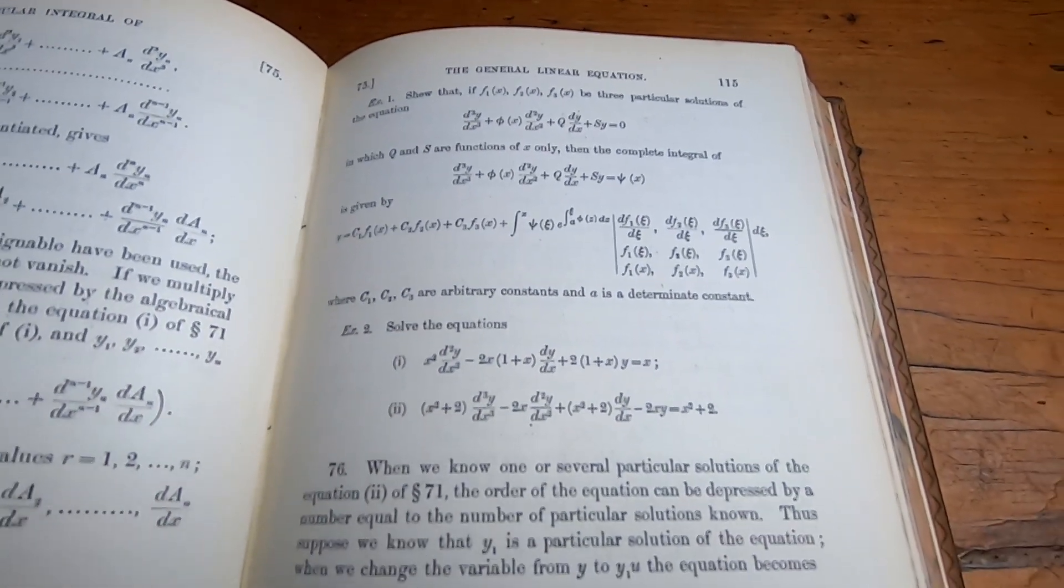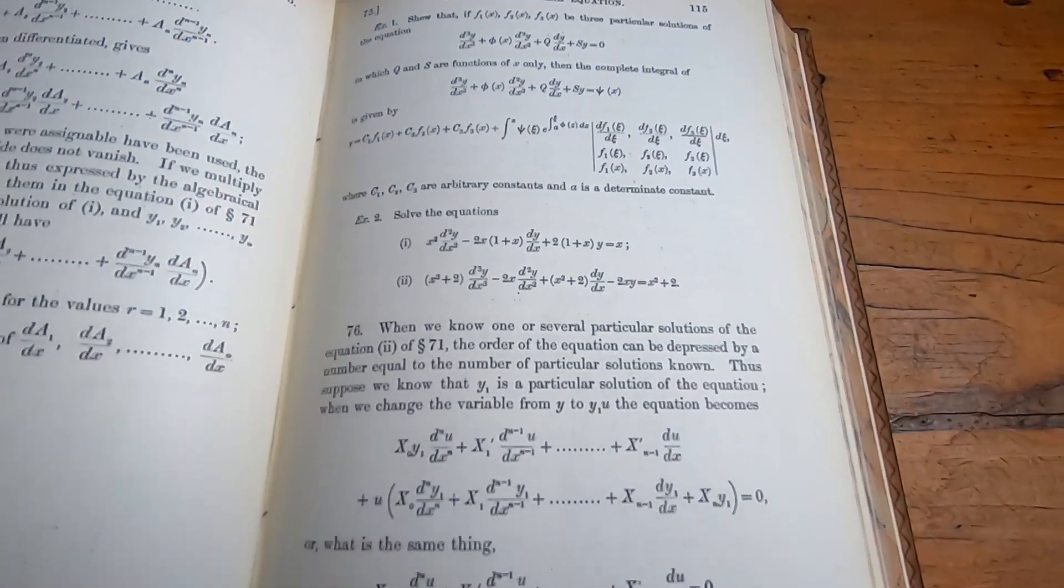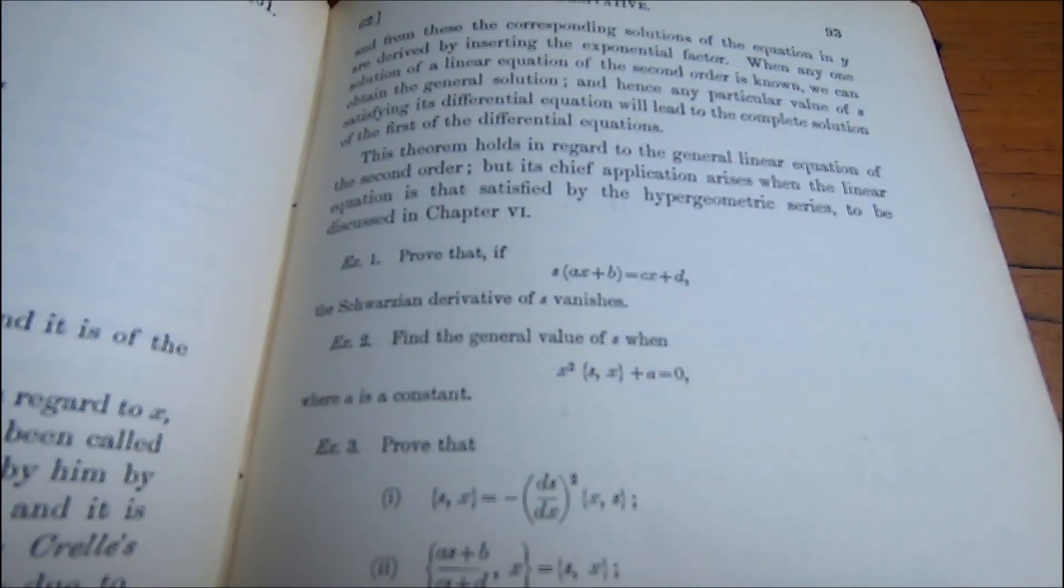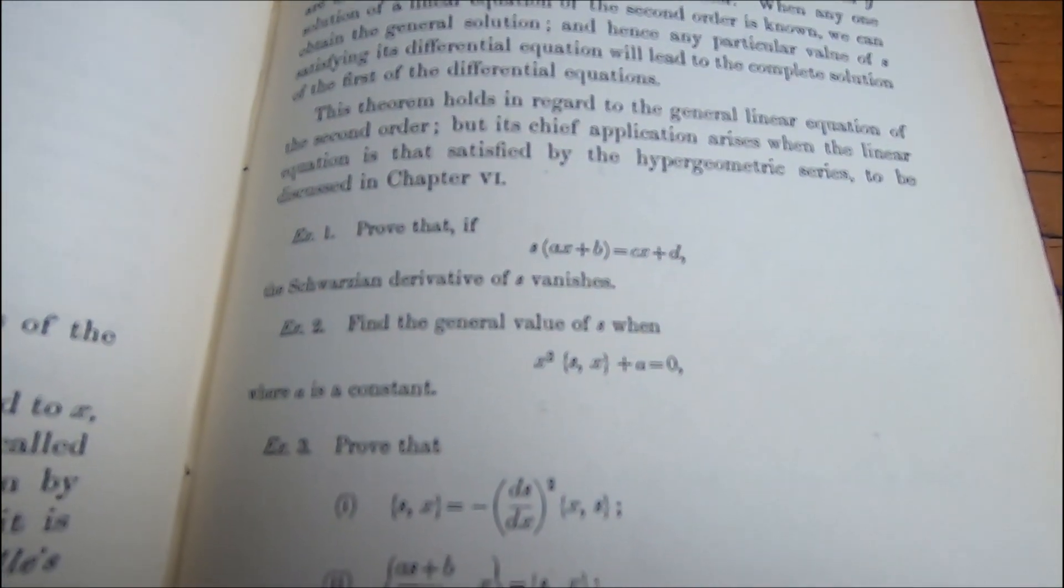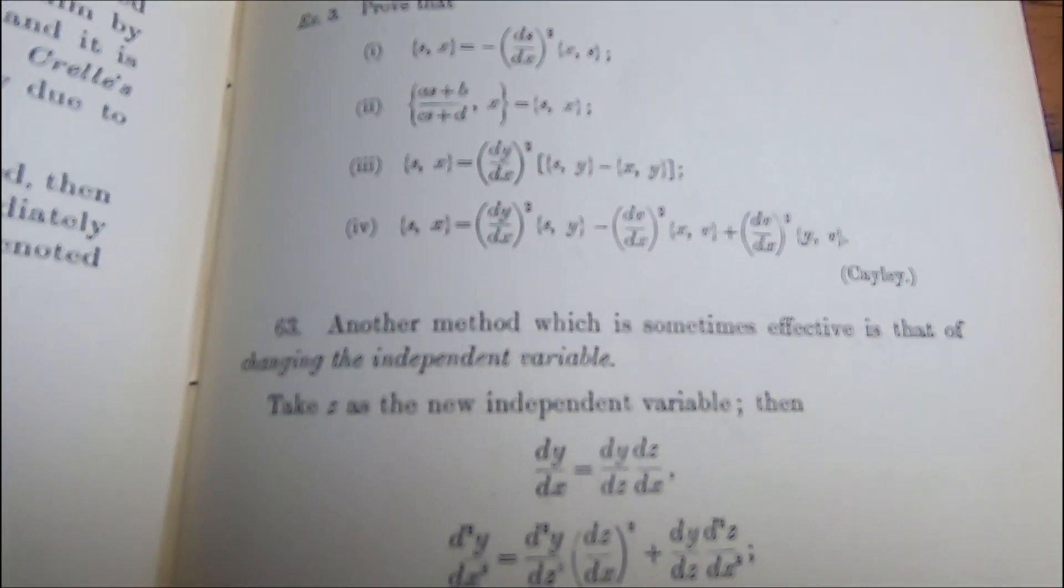Really hard to get these old books. The book has examples and it wants you to prove the examples. However, it does not give you solutions to these examples. Now, it does give you other examples.